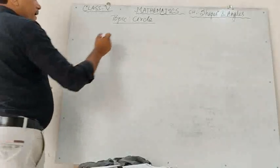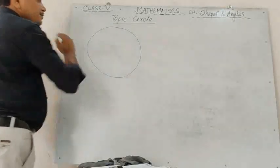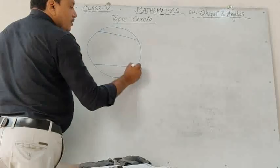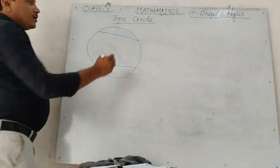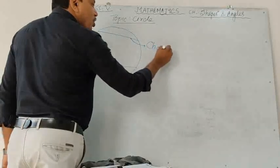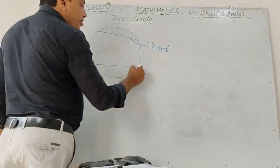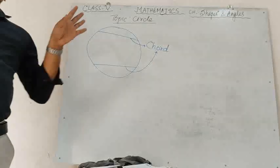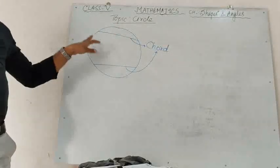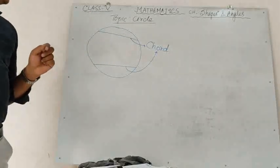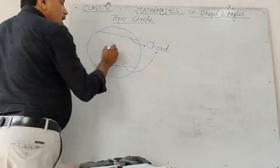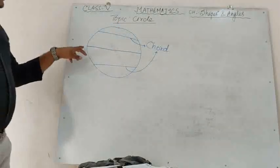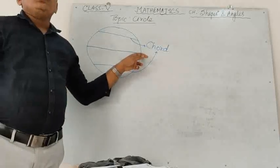Now, if I draw a circle and join any two points on the circle, the line I get is called the chord. In a circle there are infinitely many chords, as we are connecting any two points on the circle.